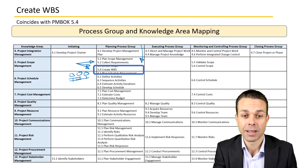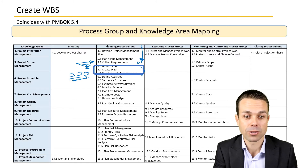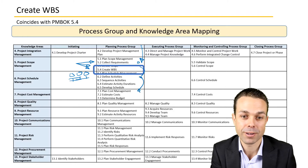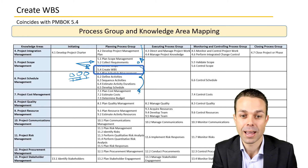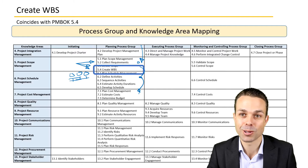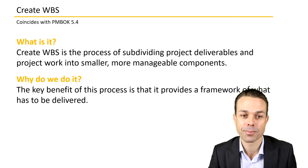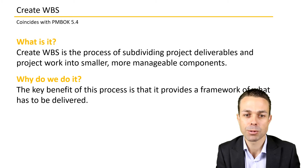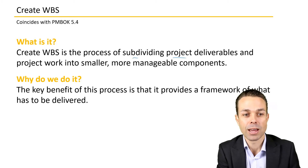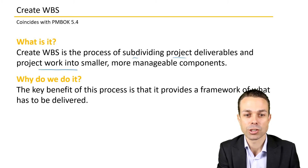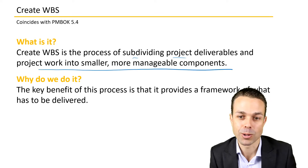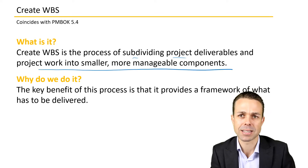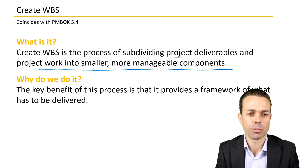Going from top to bottom in the planning process group, we're really defining that scope before we get into things like schedule and cost. The scope will actually feed into what the cost is and what the schedule is going to look like. Creating the Work Breakdown Structure is the process of subdividing project deliverables and work into smaller and more manageable components — usually activities that we can actually complete to deliver our project.